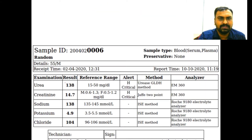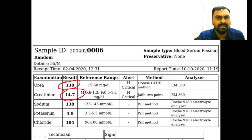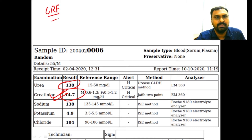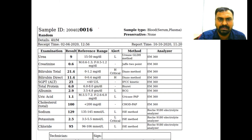In this report, urea is 138 and creatinine is 14.7. The high creatinine level here is most likely due to chronic renal failure or acute renal failure — kidney damage leads to both urea and creatinine being elevated.